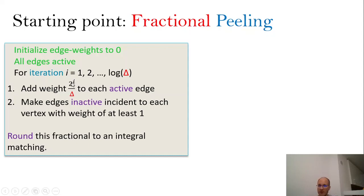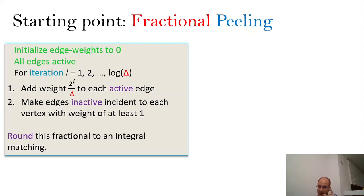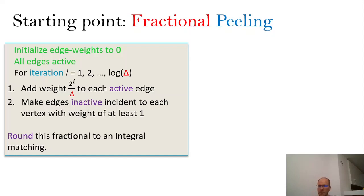Fractional peeling maintains edge weights for each edge, corresponding to a fractional matching. Initially all edge weights are set to zero. Each edge can also be active or inactive; initially all edges are active. The algorithm proceeds in log Δ iterations, just as before. In each iteration there are two steps. In the first step, the algorithm increases edge weights by 2^i / Δ for each active edge; inactive edges don't change. In the second step, the algorithm looks at every vertex and sums the edge weights incident to it. If the sum of edge weights is at least one, this vertex becomes inactive, and more importantly all edges incident to it become inactive and remain inactive. Once we get this fractional matching, we round it to an integral one.